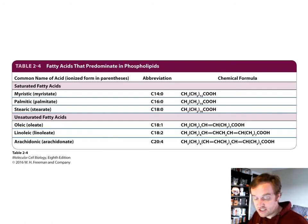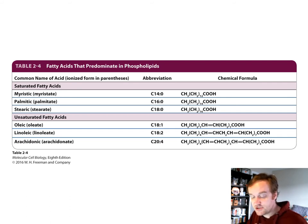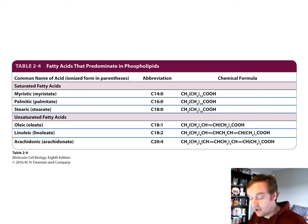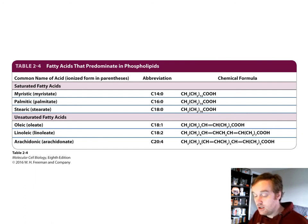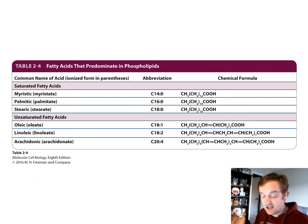There are two different types of fatty acids in phospholipids: saturated and unsaturated. Unsaturated fatty acids have double bonds within them and form more kinked chains, while saturated fatty acids have no double bonds and allow for tighter packing together.